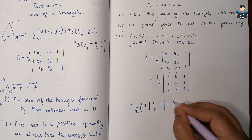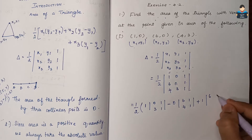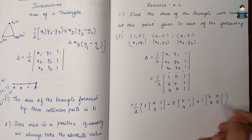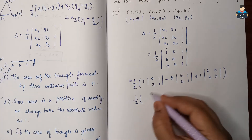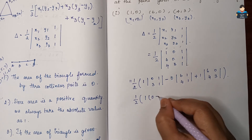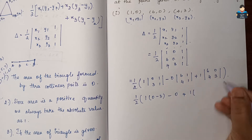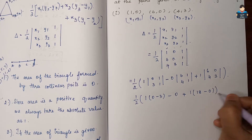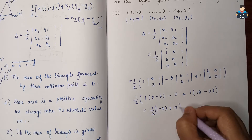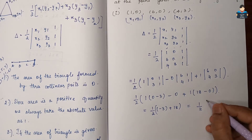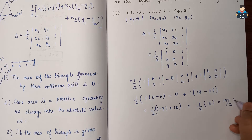So we get half into: 1 times (0 minus 3) minus 0 times (6 minus 1) plus 1 times (6 times 3 minus 0). That gives half into (minus 3 plus 18), which is half into 15, which is 15 by 2. So the area is 15 by 2 square units.